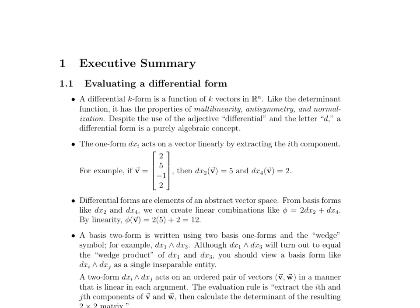You may be wondering how exactly do I compute a k-form? Well, let's start with just a one-form. A one-form, dx_i, acts on a vector linearly by extracting the i-th component. For instance, if we have this vector v and we have the one-form dx_2 act on it, it's going to extract the second component, which happens to be 5. So dx_2(v) equals 5. Similarly, dx_4(v) will extract the fourth component and equal 2.